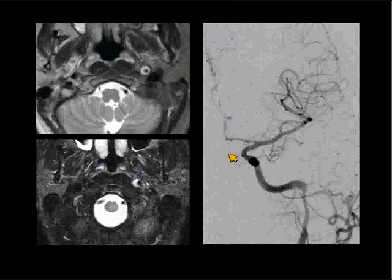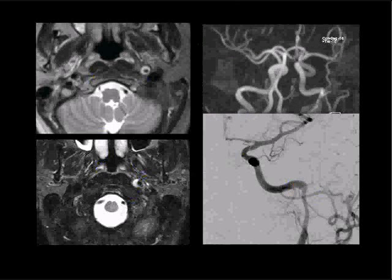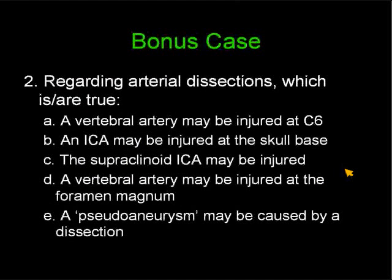Here are the findings on the catheter angiogram. It's very difficult to make the definitive diagnosis in this case on the catheter angiogram — the only thing you see is narrowing. Because of the location and the patient's clinical history, you can suggest that it is a dissection, but in order to make the diagnosis you need the axial images. Here is the image shown initially, and here is the abnormality confirmed on the catheter angiogram — a little subtle, but obviously present. Second question: regarding arterial dissections, which one is or are true?